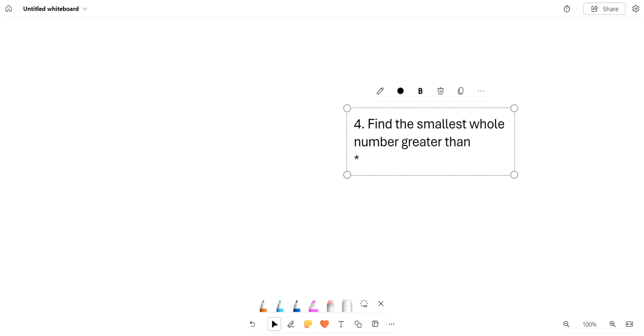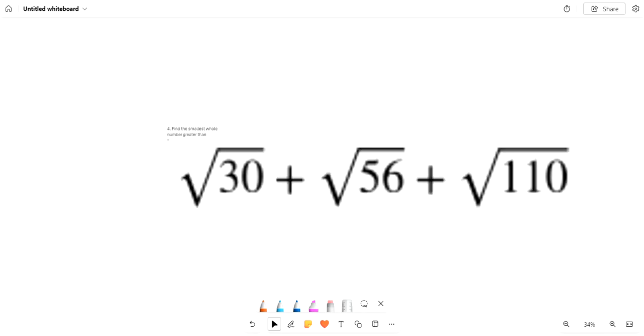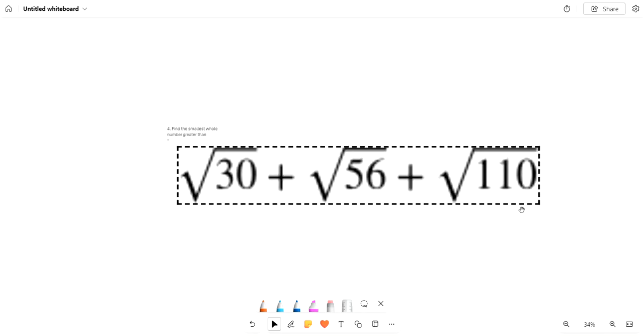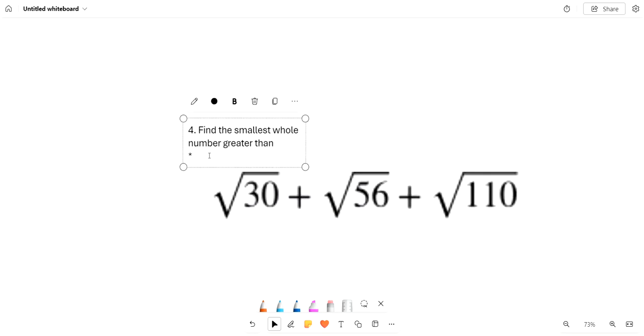Okay, so this is number 4 on week 27 Friday. And so this says, find the smallest whole number greater than square root 30 plus square root 56 plus square root 110.